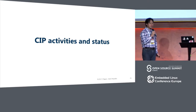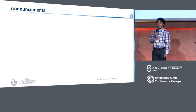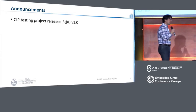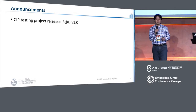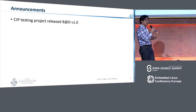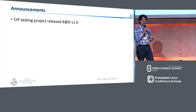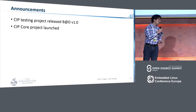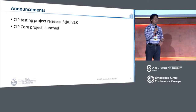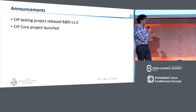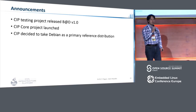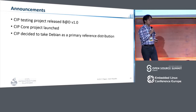Let me describe the current status of the CIP base layer development. First, I would like to announce three things. CIP just released board-at-desk — this is a CIP kernel testing environment made by the CIP project and CodeSync, using LAVA and kernel CI features. Next, CIP Core is just launched — we need to create a base layer for industrial-grade systems, and CIP Core is the first step to create that base layer. Finally, CIP just decided to take Debian as our CIP primary distribution, and I will describe the meaning of primary distribution later.